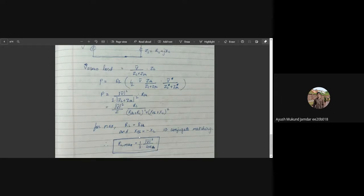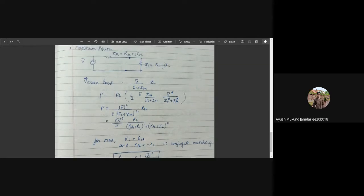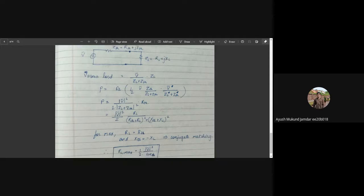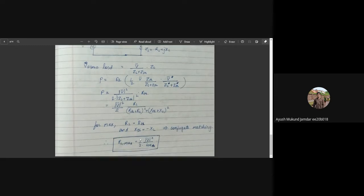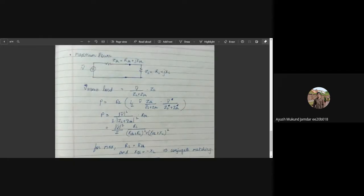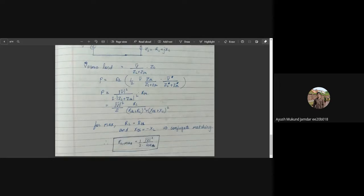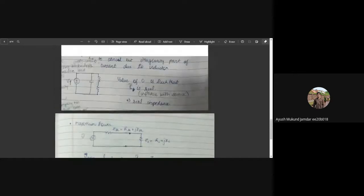xl equals minus xth is what we call conjugate matching, meaning the net impedance seen by the voltage source is zero. The net reactance is zero, only resistance is seen by the load. rth equals rl maximizes the power, and this maximum power turns out to be half of mod V squared by 4 rth on average. This concludes the power analysis.